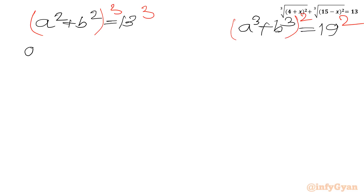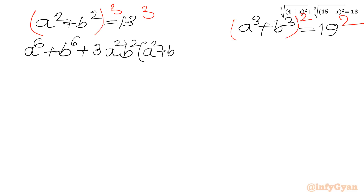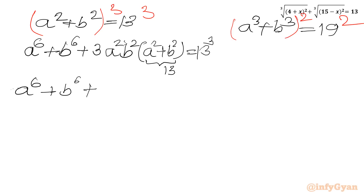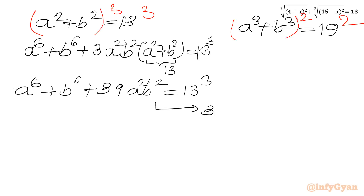Cubing Equation 1: a⁶ + b⁶ + 3a²b²(a² + b²) = 13³. Since a² + b² = 13, I can write a⁶ + b⁶ + 3 × 13 × a²b² = 13³, which gives a⁶ + b⁶ + 39a²b² = 13³. This is Equation 3.